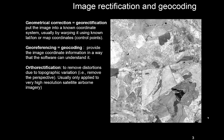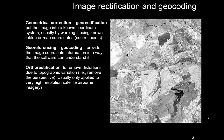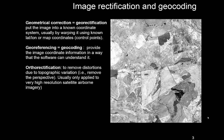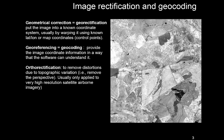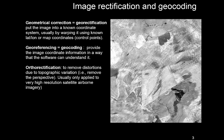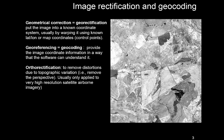Ortho rectification is slightly more complicated. That's where you remove distortions — much as we saw with radar. If you look at an optical image at an angle you will still see distortions, as you can see in this moving image here. Ortho rectification uses a digital elevation model to simulate how the distortion was created and then rectifies it by mapping all locations back to a regular coordinate grid.